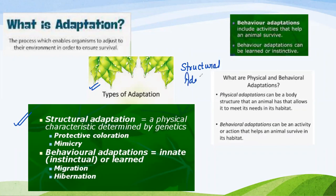Structural adaptations are reflected in the body. They have changed after years, decades, and generations because that was the need to survive. A physical characteristic is determined by genetics — a genetic change. So if there is a genetic change, that leads to structural adaptation, like protective coloration and mimicry.